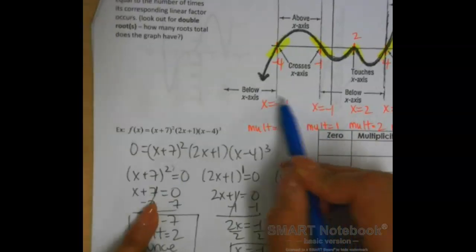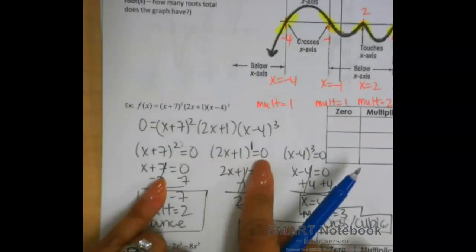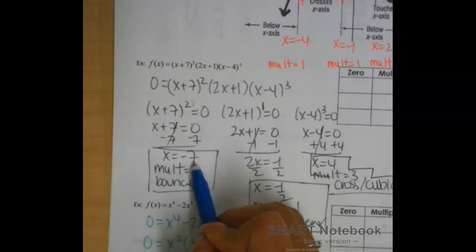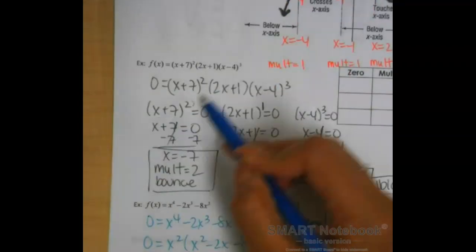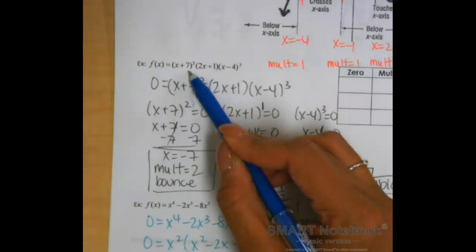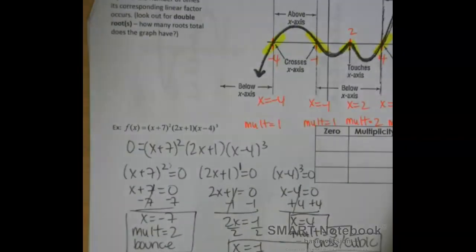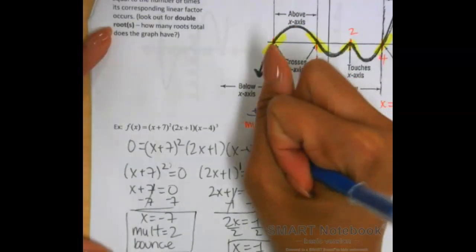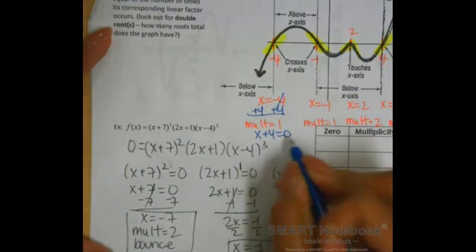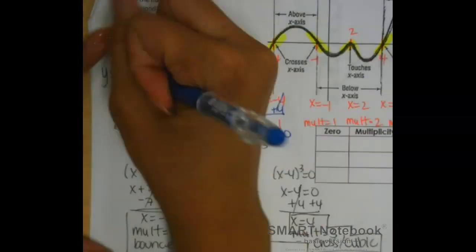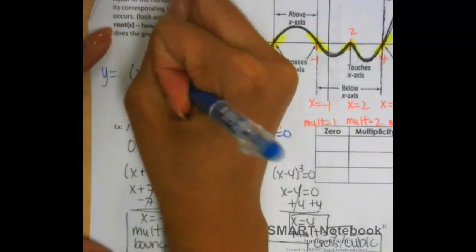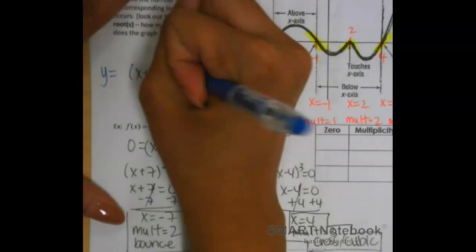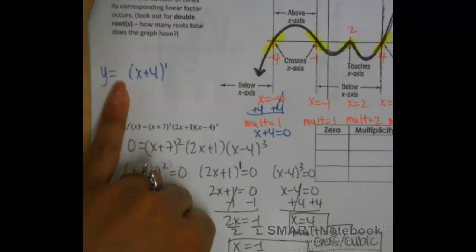If I wanted to make an x-intercept into a binomial, I need to make each equation equal to zero. For example, x equals negative 7 becomes a binomial. So for x equals negative 4, I add 4 to each side, giving me x plus 4 equals zero. This will be part of our equation, so I write x plus 4. The multiplicity on x plus 4 is 1, so put a 1 next to it. Make sure you leave space at the front.